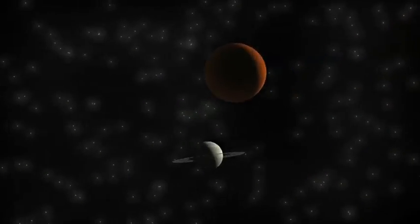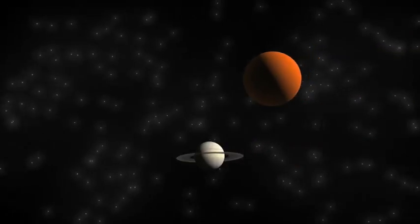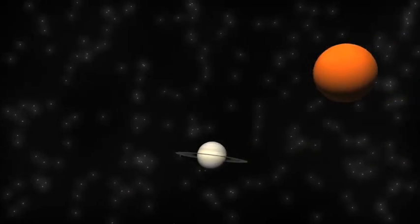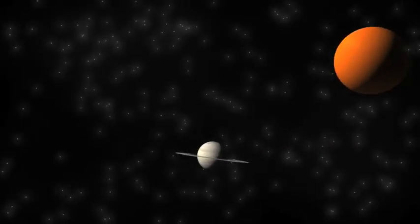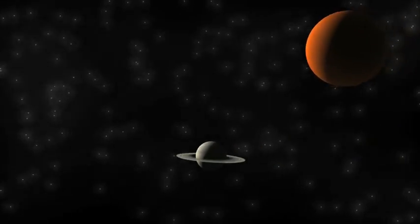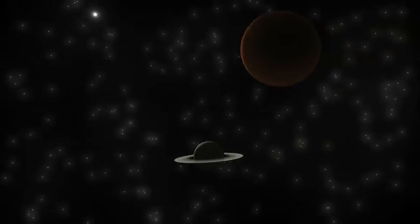Titan is the second largest moon in the solar system, and it possesses an atmosphere remarkably like Earth's. It is primarily composed of water ice and rocky material.